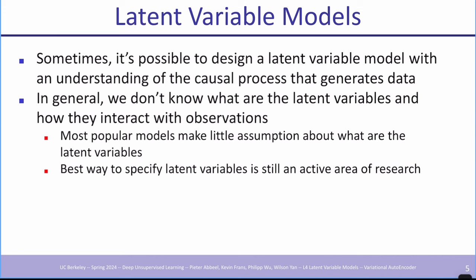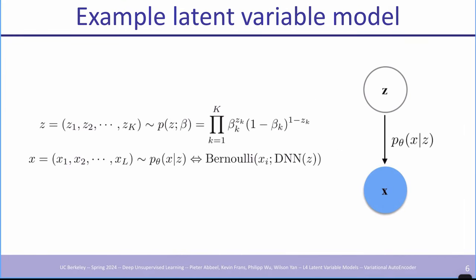Today, we're not going to assume any specific structure like a graphics engine — we're going to hope it just emerges from the data. As in previous lectures, we start with the simplest version of each model and build up from there. The simplest latent variable model has x as the data point and z as the latent. In this lecture, z will always be the latent and x will be the data.